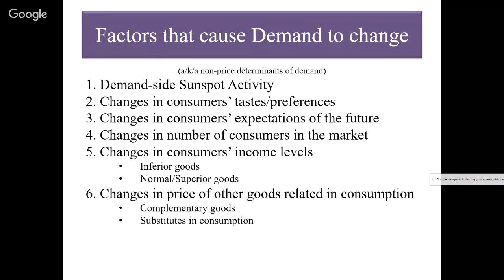However, products like Xbox gaming software and Xbox consoles have a strong relationship in consumption — they would be called complementary goods. Some products are very strongly complementary, which I call strictly complementary, meaning at least one product is useless for the intended purpose without the other. An Xbox disc with software for Forza Motorsport 6 is unusable without the Xbox One console — it's also unusable without a TV, a controller, batteries, and electricity. The gaming software is unusable for the intended purpose without the console. Those products are strictly complementary in consumption.